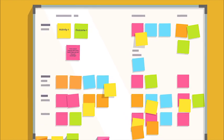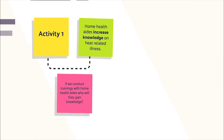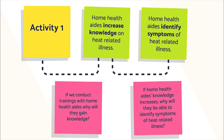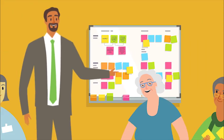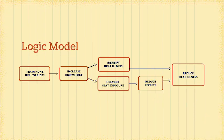Underlying factors often hold our logic model pieces together. The group works to identify underlying assumptions between two key outcomes—home health aids' increase in knowledge and adoption of a new behavior such as identifying symptoms of heat-related illness. A second pink sticky note asks: 'if home health aids' knowledge increases, why will they be able to identify symptoms of heat-related illness?' Jackson suggests making these assumptions explicit in the logic model by using dashed lines to show areas of uncertainty.